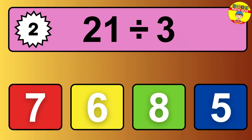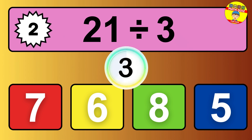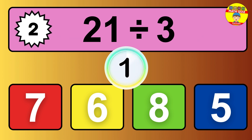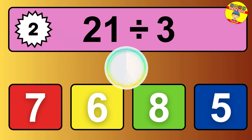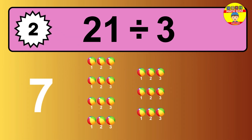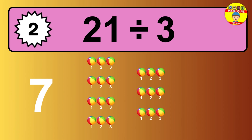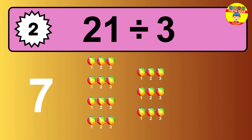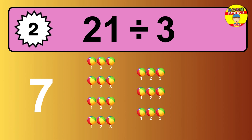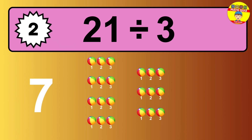What is 21 divided by 3? Picture this: you have 21 objects to divide into groups of 3. How many groups can you make? Let's think about it. Ready to find out? Let's break it down. Let's imagine you have 21 objects — can you picture them lined up?